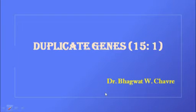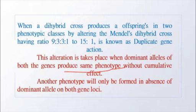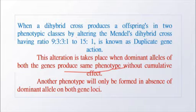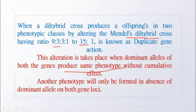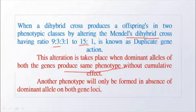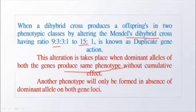Hello everyone, welcome to the course on genetics. In this video we are going to study the next type of genetic interactions, which is known as duplicate genes, which will give rise to a ratio of 15:1. When a dihybrid cross produces offspring in two phenotypic classes by altering Mendel's dihybrid cross ratio of 9:3:3:1 to 15:1, they are called duplicate gene action. This modification is due to duplicate gene action.